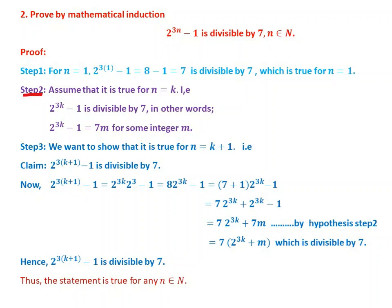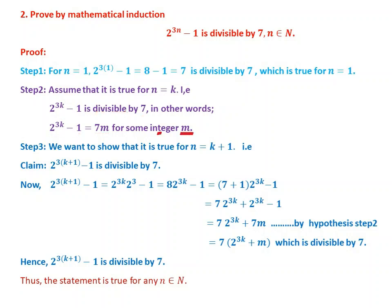Step 2: Assume it is true for n = k. That means 2^(3k) - 1 is divisible by 7. In other words, 2^(3k) - 1 = 7m for some integer m.